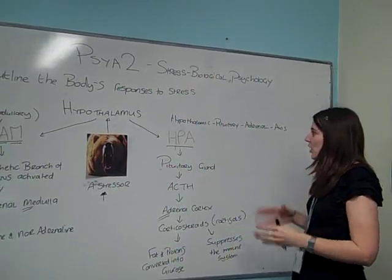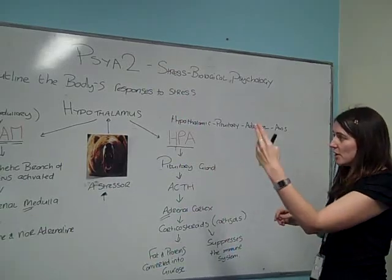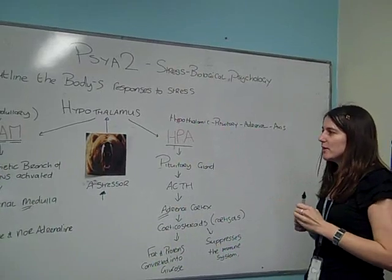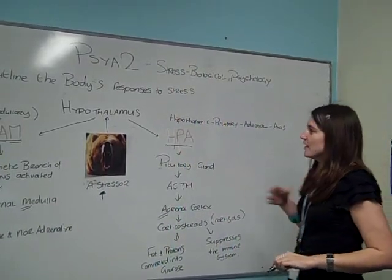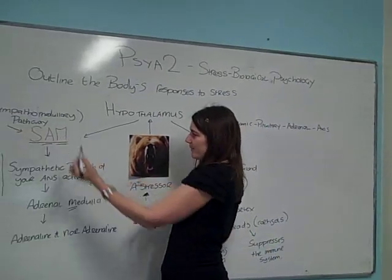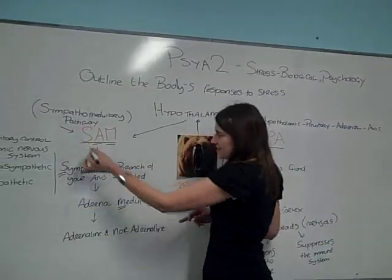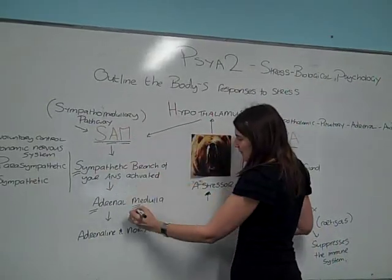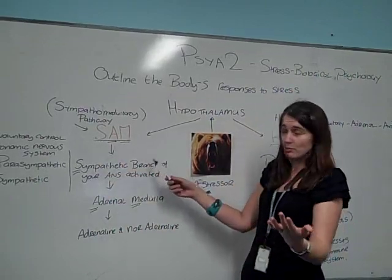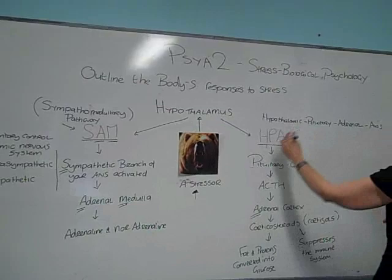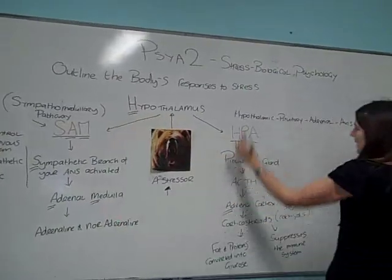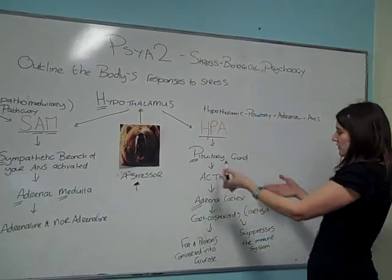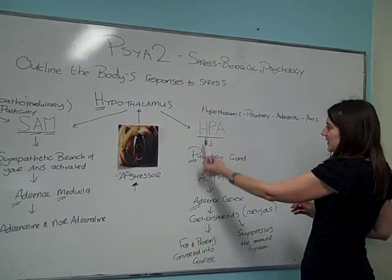To summarise, your body responds to stress in two ways: the SAM and the HPA. A quick way of remembering it — the SAM, S-A-M: S for sympathetic branch, A for adrenal, M for medulla. It tells you the order it goes in. And HPA: H for hypothalamus, P for pituitary gland, A for adrenal cortex or ACTH — whichever you feel you need to learn most. So that is how your body responds to stress.